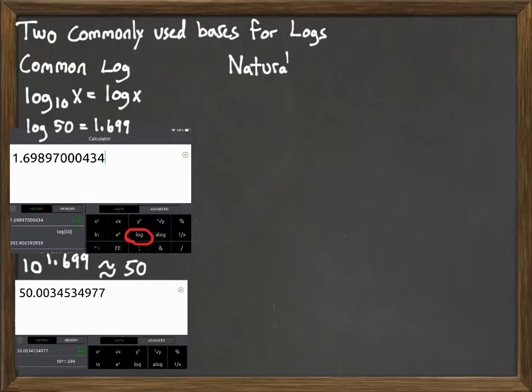The second logarithm is the natural log. That has nothing to do with nature—it's mathematically the natural log. That's log base e, going back to that e number from before: 2.71828 and so on.